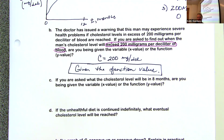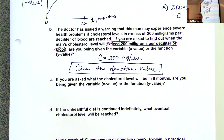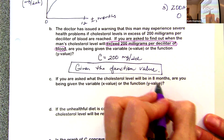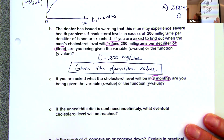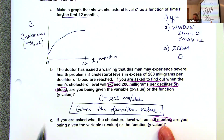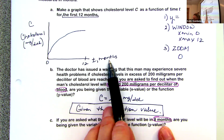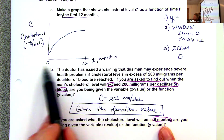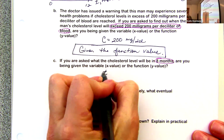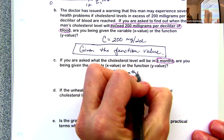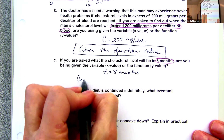By contrast, if you were asked what the cholesterol level will be in eight months, then you're given months — the variable value — and that's T. So we were given that T equals eight months, meaning we were given the variable value.